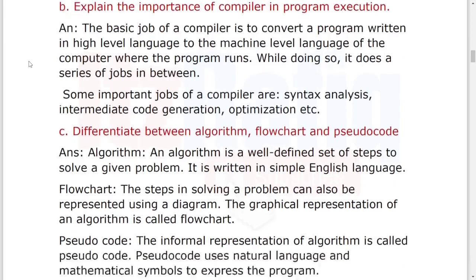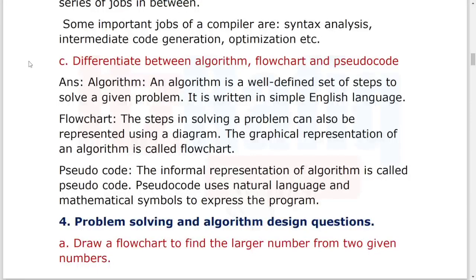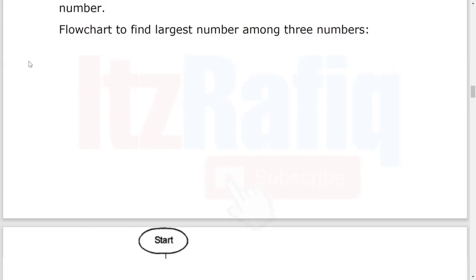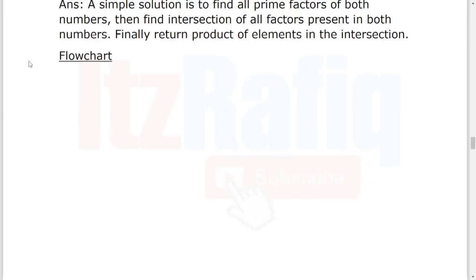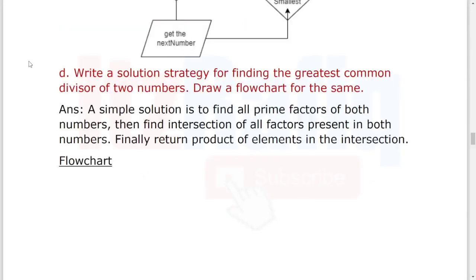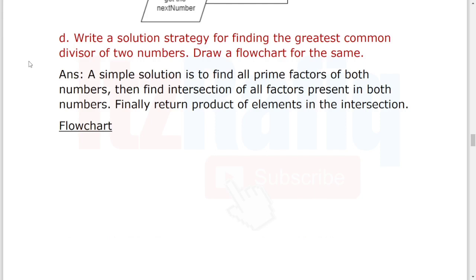We already discussed the flowcharts of questions A, B, C in the previous video, so we're going directly to question number D now. Question D: Write a solution strategy for finding the greatest common divisor of two numbers and draw a flowchart for the same.